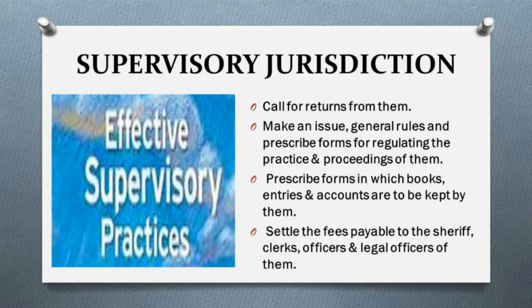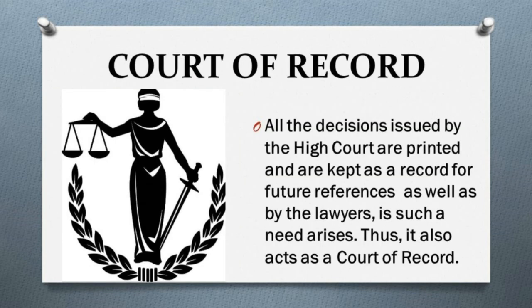Supervisory jurisdiction: the high court has the power of superintendence over all courts and tribunals in its territorial jurisdiction. It may call for returns, make and issue general rules, prescribe forms for regulating practice and proceedings, prescribe how books, entries and accounts are to be kept, and settle fees payable to sheriff, clerks, officers, and legal officers. Court of record: all decisions issued by the high court are printed and kept as a record for future reference by lawyers and courts, making it also a court of record.